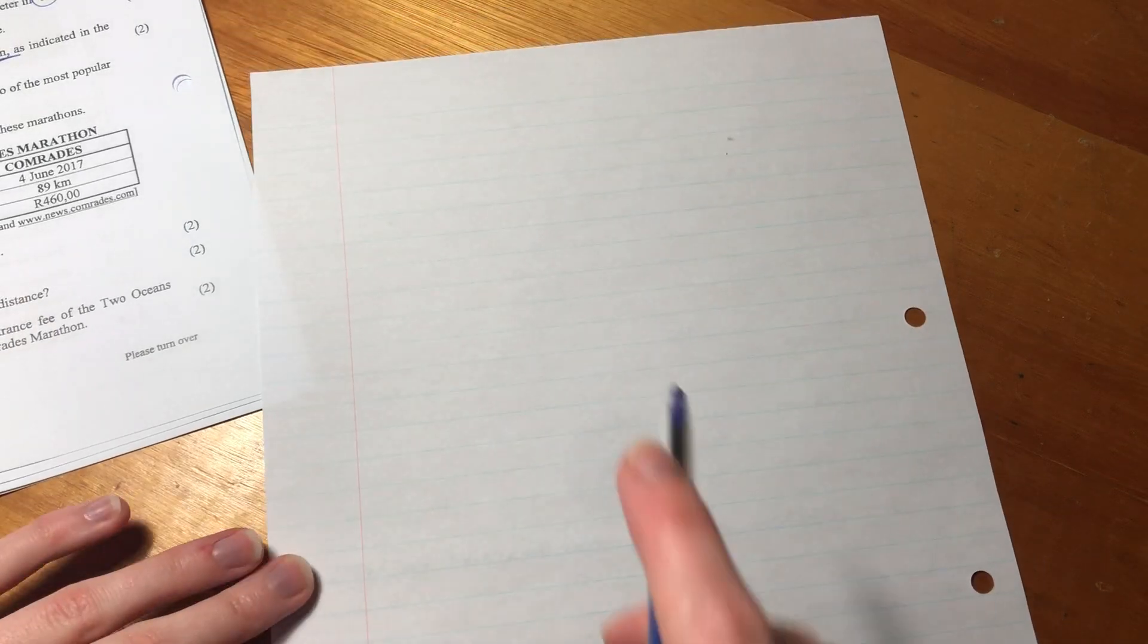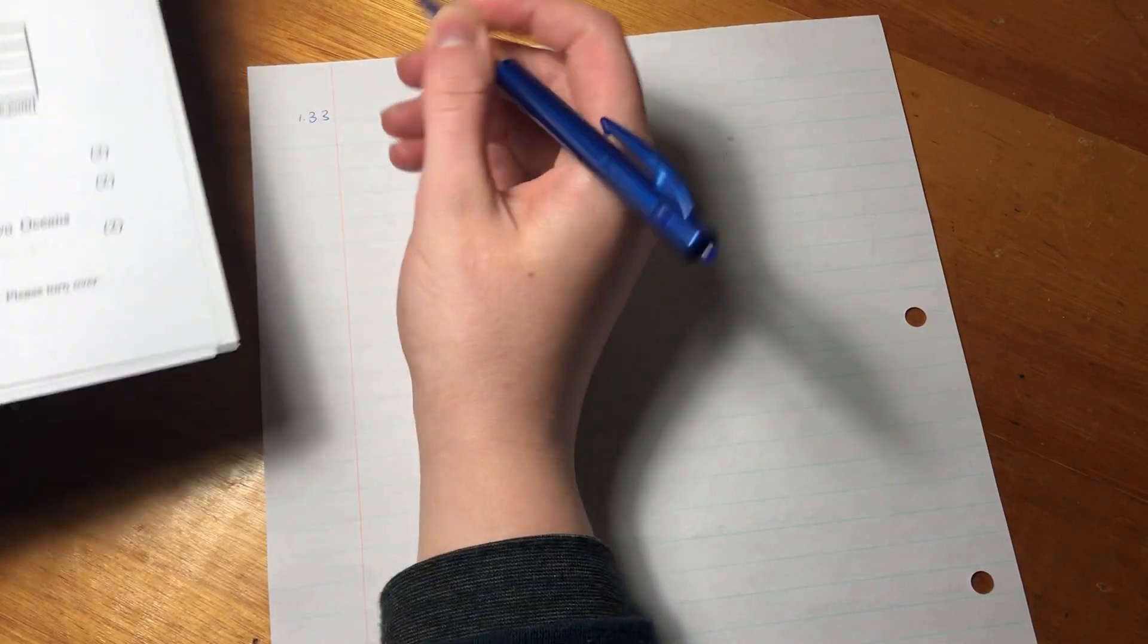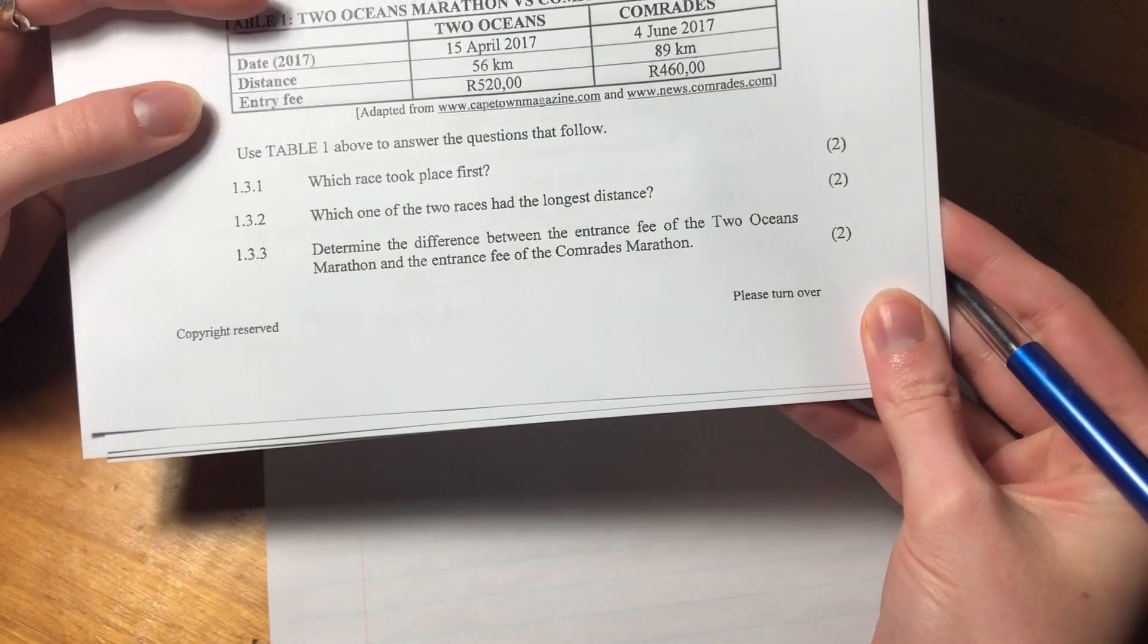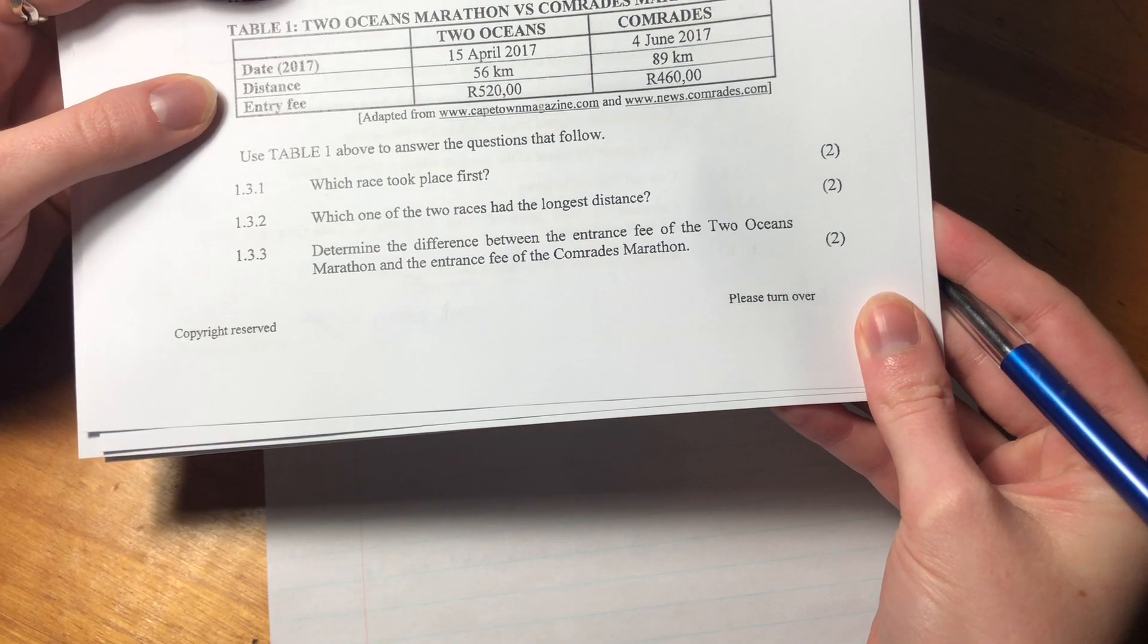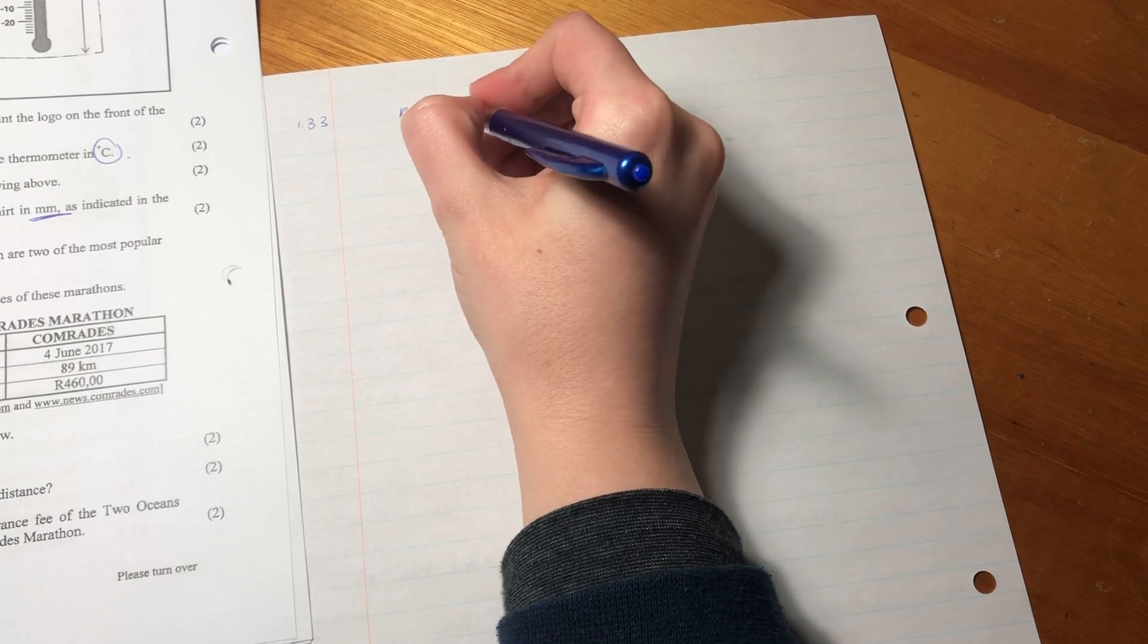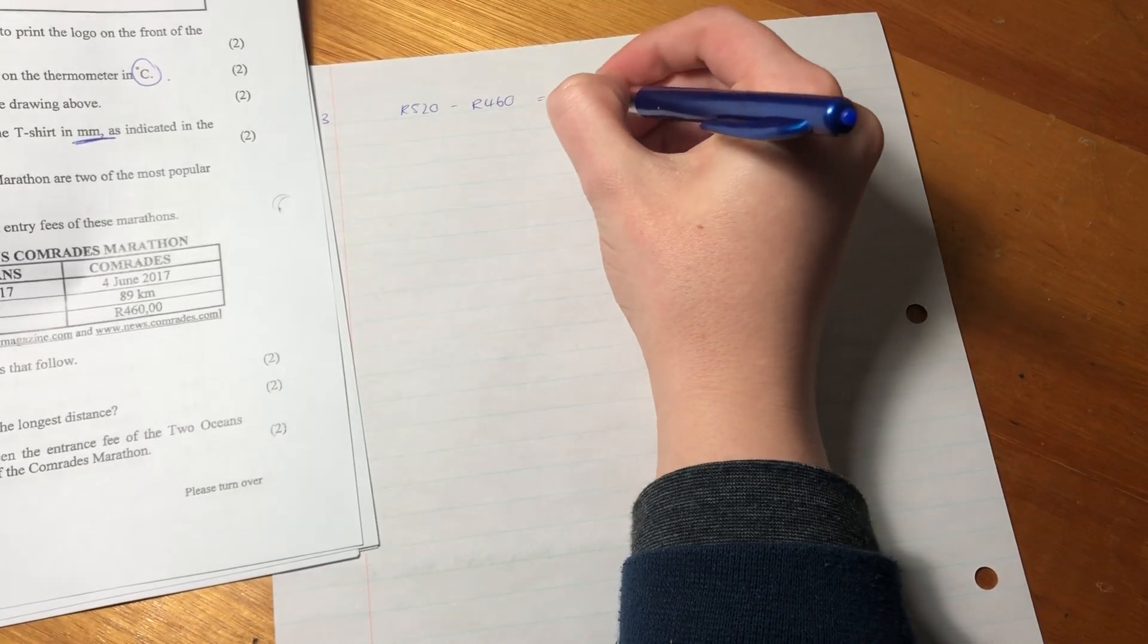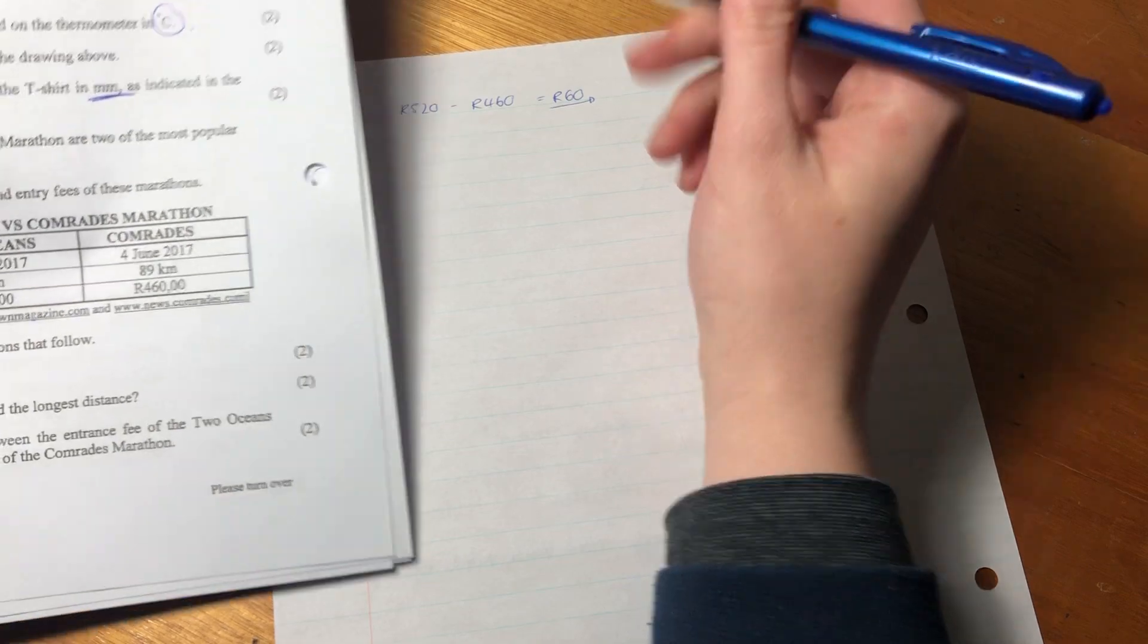Okay, now moving on to our last question for 1.3. It says, determine the difference between the entrance fee of the two oceans marathon and the entrance fee of the comrades. So the two oceans is 520, and the comrades is 460. You see that there? So the difference is 60 Rand. That was nice, quick, sweet.